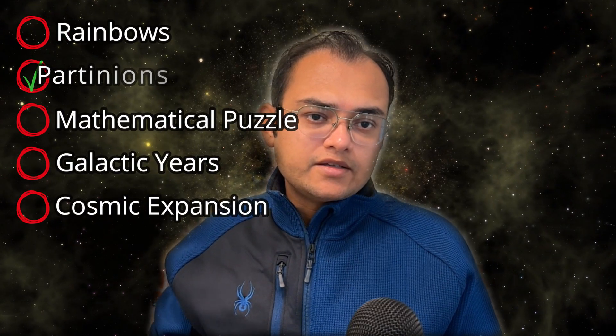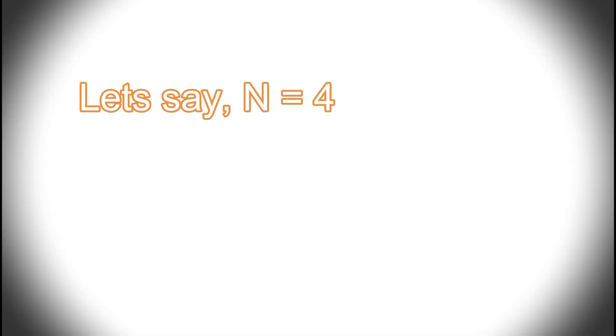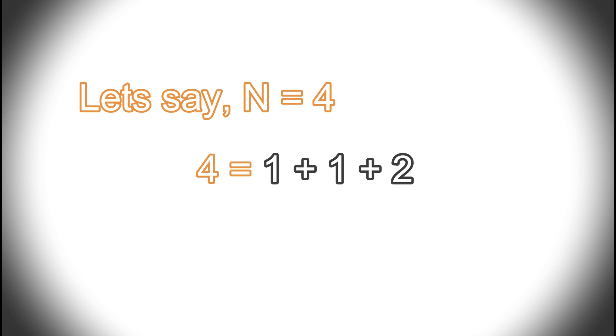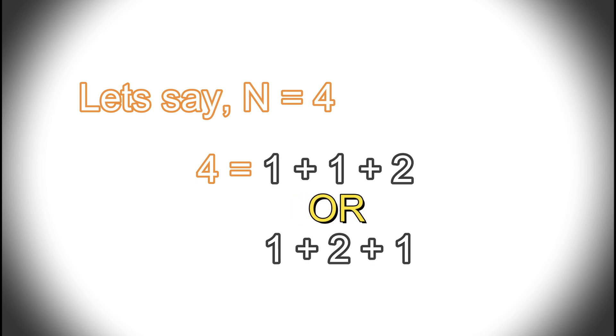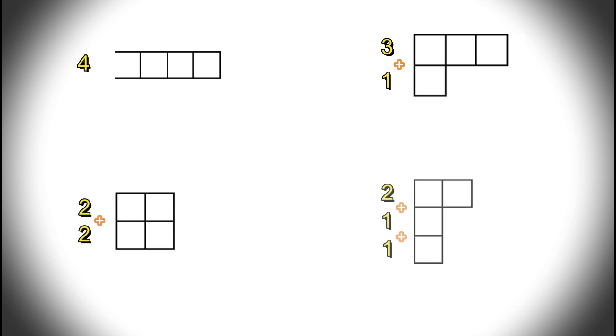The second example is partitions. A partition of a positive integer n is a way of writing n as a sum of positive integers, without regard to order. For example, there are 5 ways to partition the number 4: 4, 3 plus 1, 2 plus 2, 2 plus 1 plus 1, and finally 1 plus 1 plus 1 plus 1.